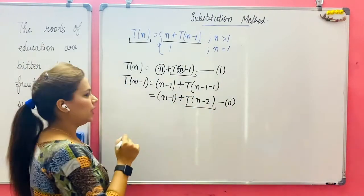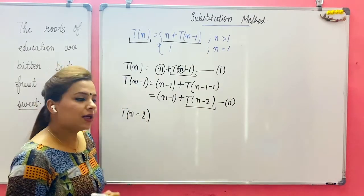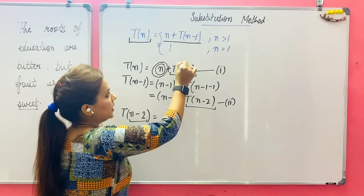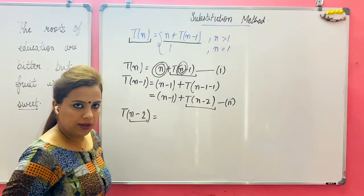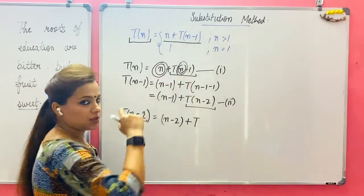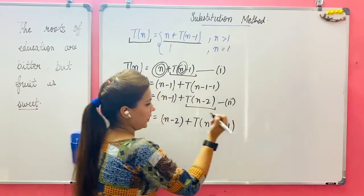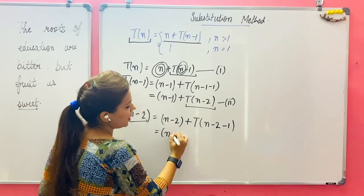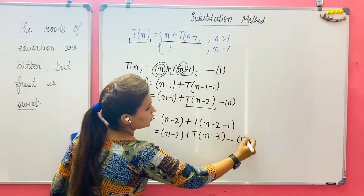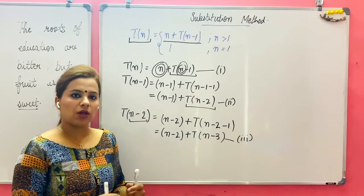Now in equation 2 I have T(n-2), so I calculate the value of T(n-2). Again put the value n-2 in your main expression in place of n. So instead of n I am writing n-2, which gives you n-2 plus T(n-3). This is my third expression.